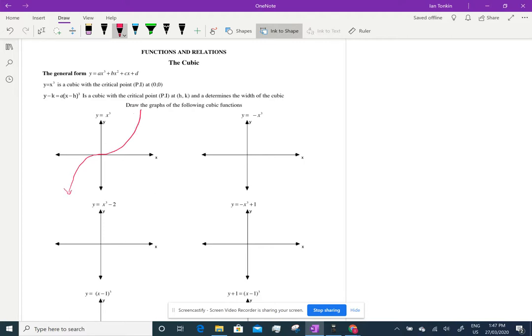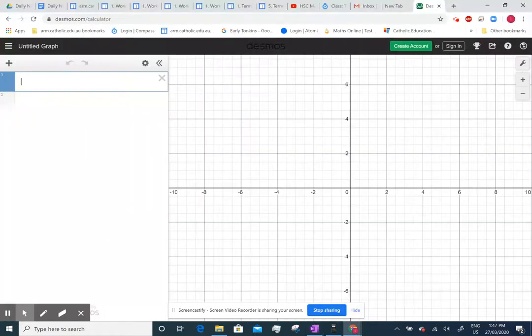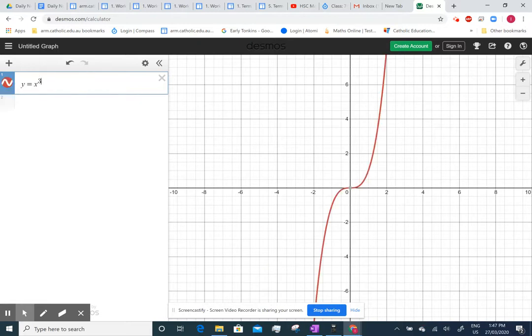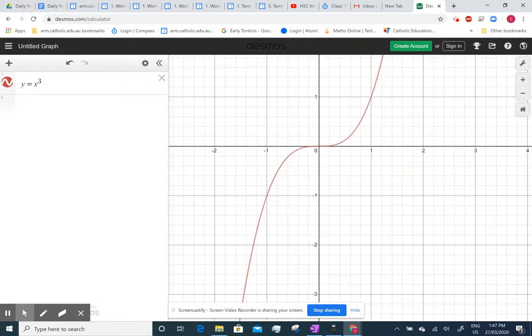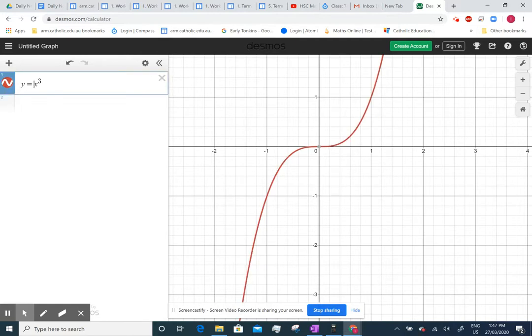The standard negative cubic just goes the other way. And I'll give you a better demonstration because we can look on Desmos. So if we go y equals x cubed, you can see it there. And if we zoom in, you can see it much better. And if I just put a negative in front of this, now remember you can do this for any of the functions that you've got. There's a negative cubic.